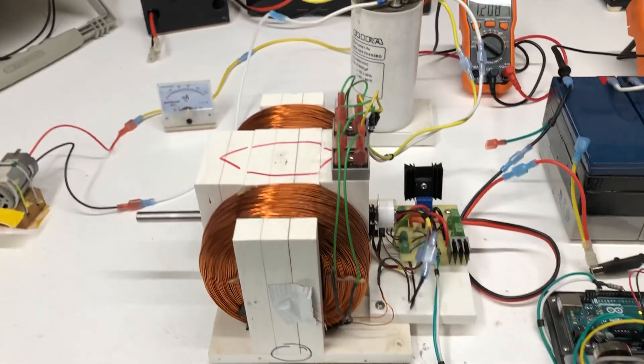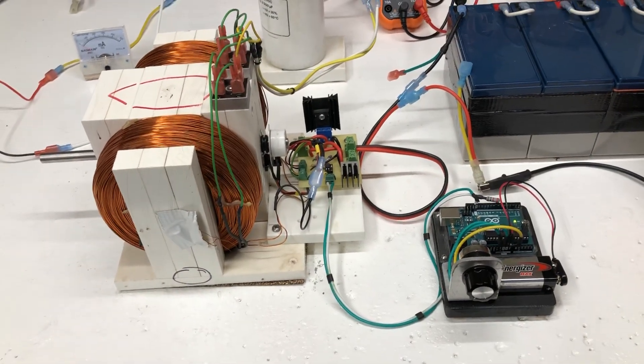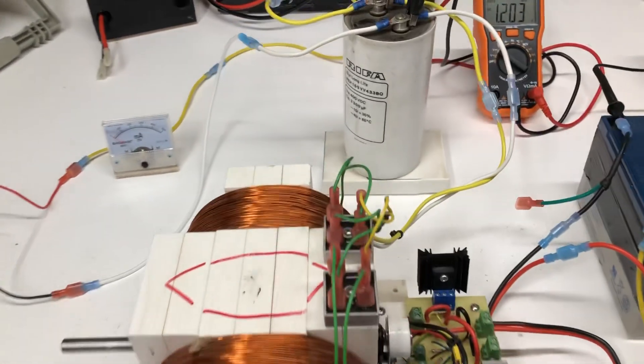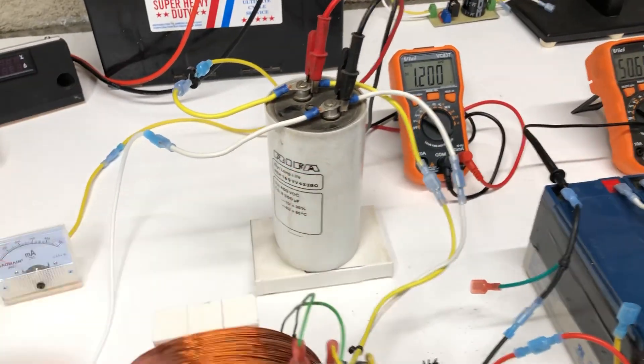And then what happens here is this motor is going to run. I'll turn this on. I'm just using an Arduino pulse width modulator as a speed control. The output is going to go through these full bridge rectifiers into this capacitor.